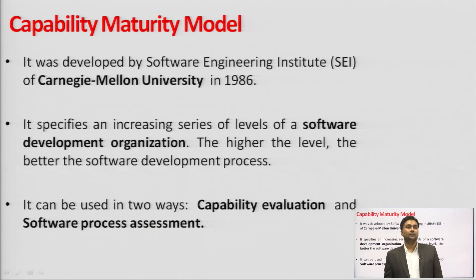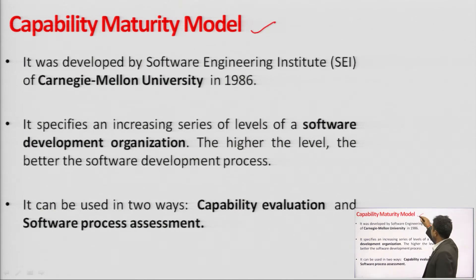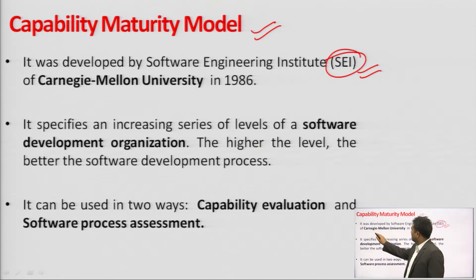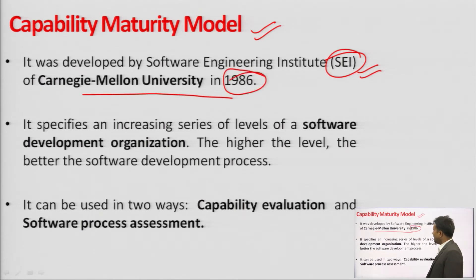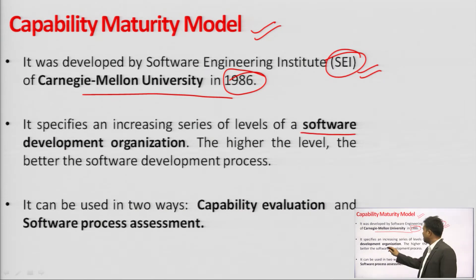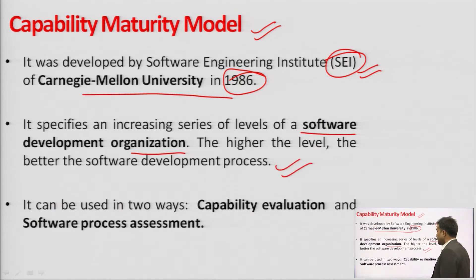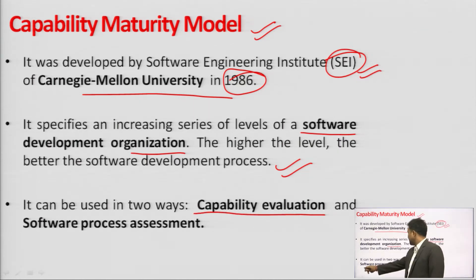This becomes a win-win model — overall productivity cost goes down, profit increases, and the customer benefits. Next is the Capability Maturity Model. It was developed by the Software Engineering Institute (SEI) at Carnegie Mellon University in 1986. It specifies an engineering series of levels of software development organizations — the higher the level, the better the software development processes. It can be used in two ways: capability evaluation and software process assessment.